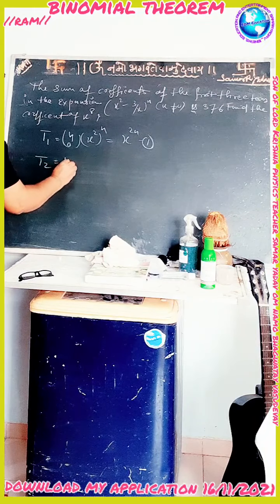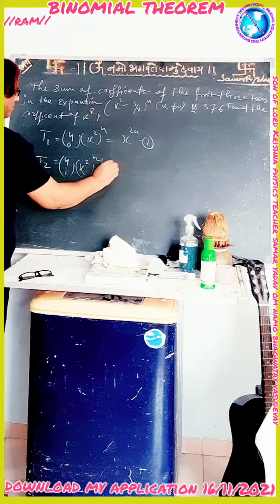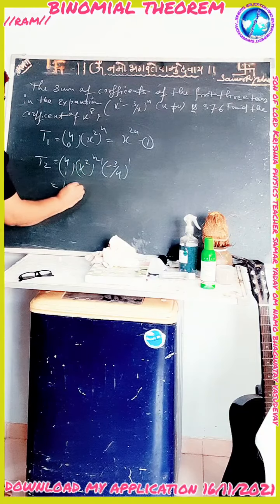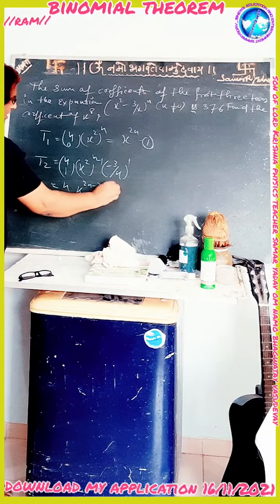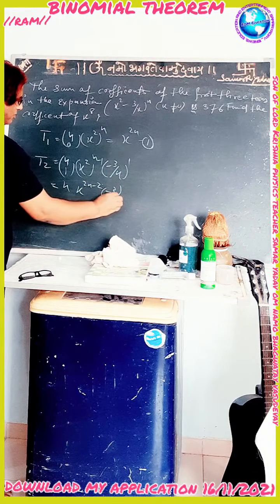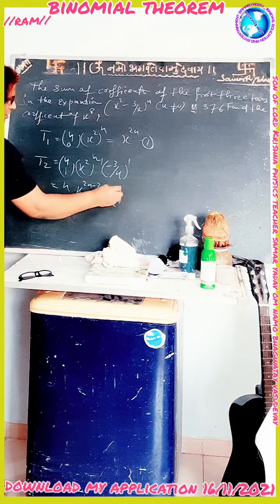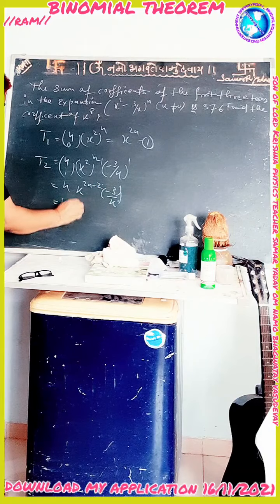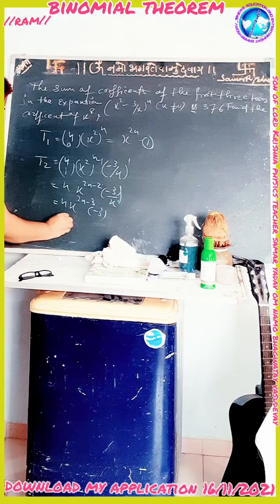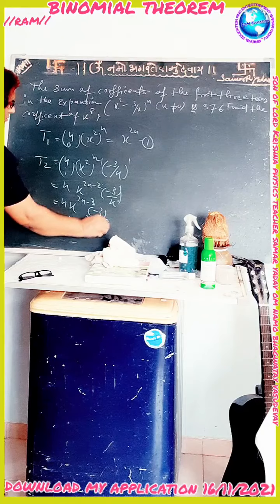Similarly, T2 is equal to nC1 · (x²)^(n−1) · (−3/x)^1. Simplifying, we get n · x^(2n−2) · (−3) · x^(−1), which gives us −3n · x^(n−3). This is term number 2.